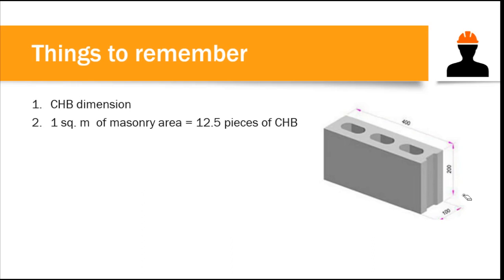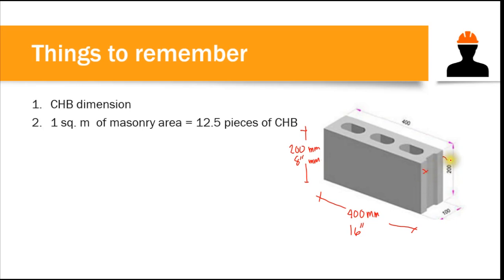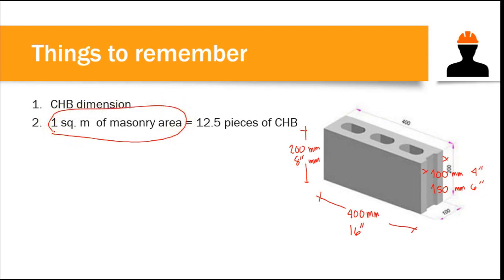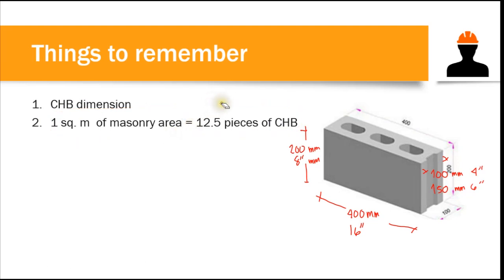First, familiarize yourself with the typical dimensions of a concrete hollow block. The length of a regular CHB is 400 millimeters or 16 inches. The height is 200 millimeters or 8 inches. There are two types of thickness commonly used in the Philippines: the 100mm CHB (4 inches) and the 150mm CHB (6 inches), typically used for exterior walls or fences. Also, for every one square meter of masonry area, 12.5 pieces of CHB are required.